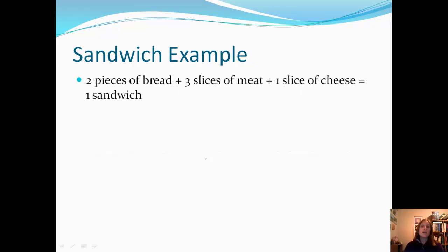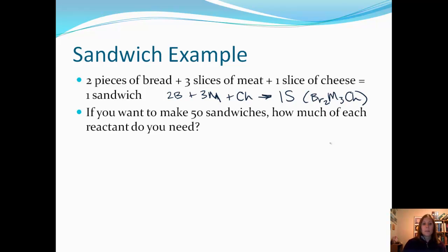Let's look at an example. If we want to make a sandwich, let's say traditionally we make a sandwich by taking two slices of bread, three pieces of meat, and one slice of cheese, and that equals one sandwich. We can write an equation for that. Two pieces of bread plus three slices of meat plus a slice of cheese produces one sandwich or one product. We can also write one sandwich as Br2M3CH, because that represents our elements in the quantities.